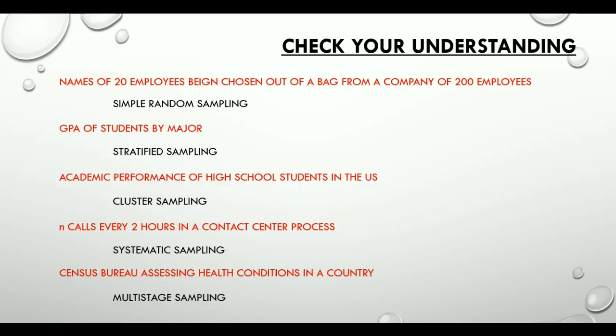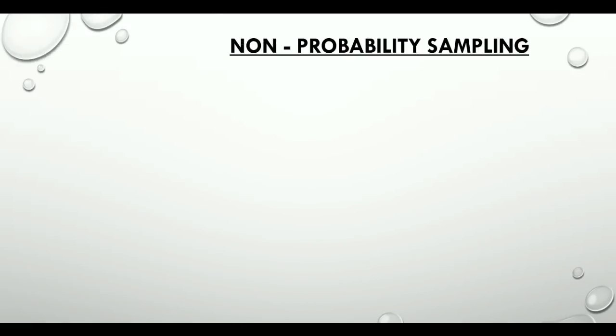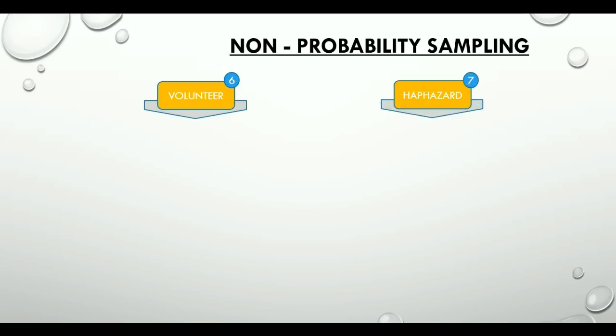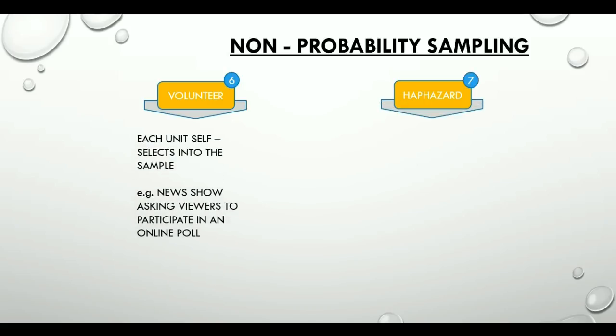Now let's move on to non-probability sampling methods. These are primarily of two types. Volunteer: here each unit volunteers itself to be a part of the sample — for example, a game show or a news channel asking its viewers to participate in an online poll. Viewers voluntarily participate and thus become part of the sample.